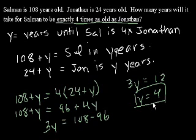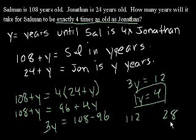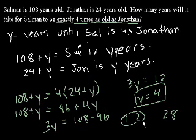Let's see if that's true. If Salman is 108 right now, in four years he's going to be 112. And if Jonathan is 24 right now, in four years he's going to be 28. And 28 times 4 is 80 plus 32 — yep, exactly 112. So it looks like that problem worked. Excellent. Let's do another one.